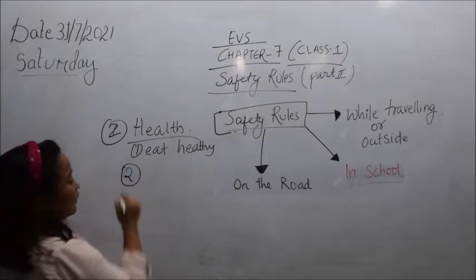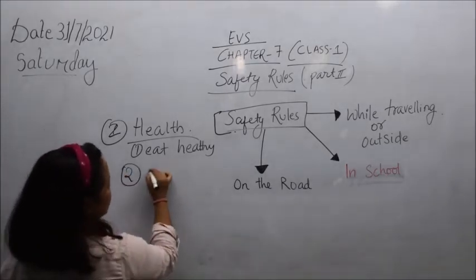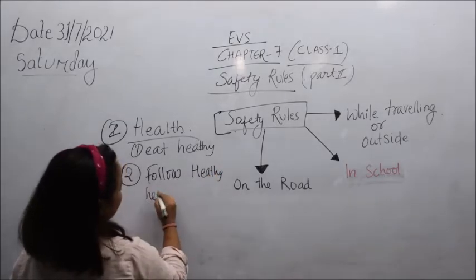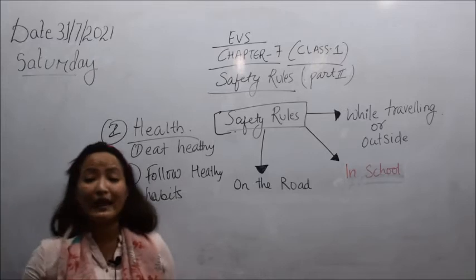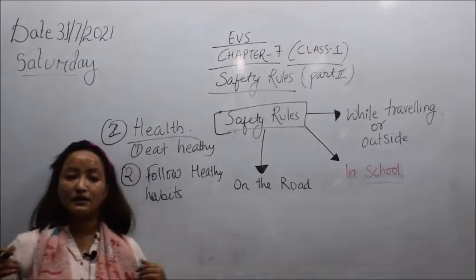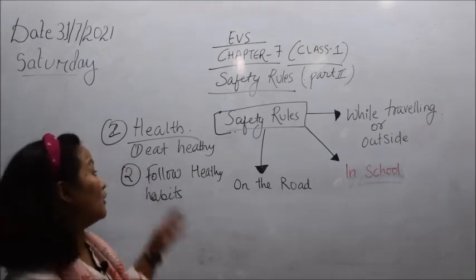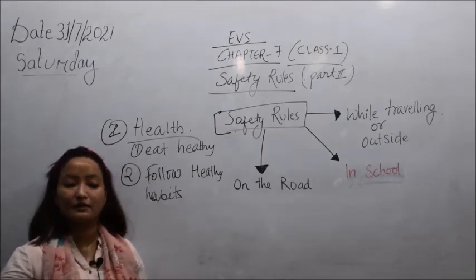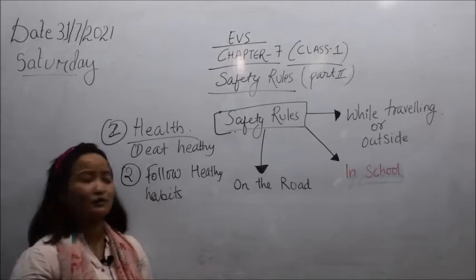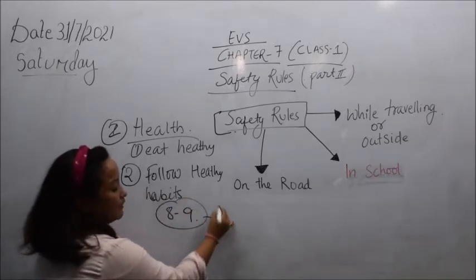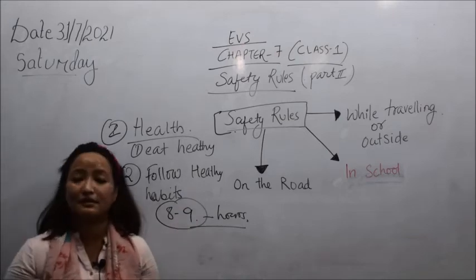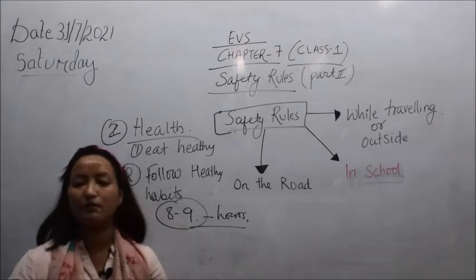The second health safety rule: follow healthy habits. Healthy habits include waking up early in the morning, doing physical activities, eating healthy, thinking positively, and sleeping early at night. At least seven to eight or nine hours of sleep is a must — our human body needs that much rest. Lack of sleep will seriously affect your body.